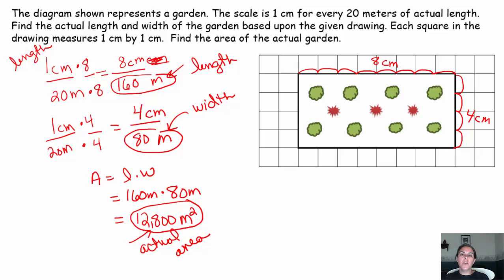And it's important that if you want to find the actual area, you use the actual length and the actual width. We're going to talk about other strategies to find it, but it's important that you use the actual length and actual width to find the actual area of the garden.